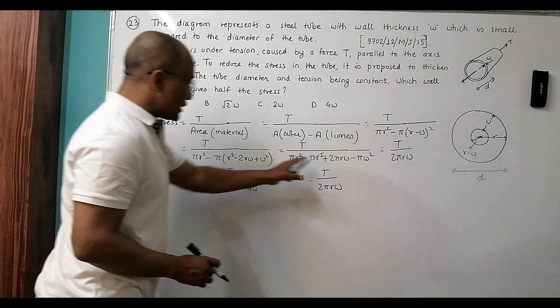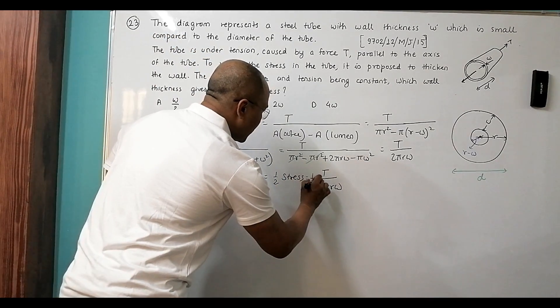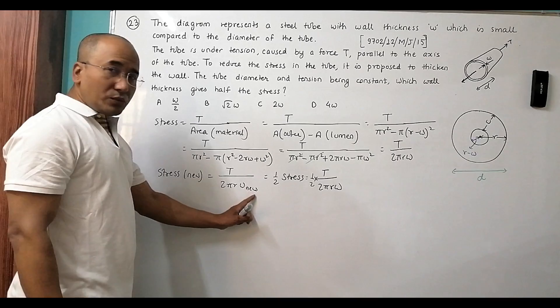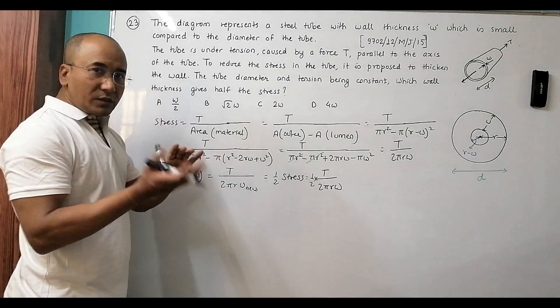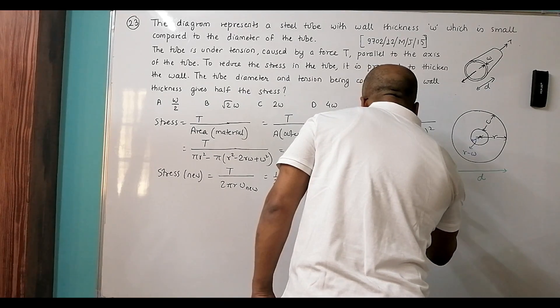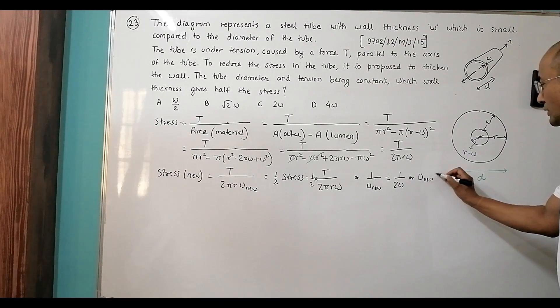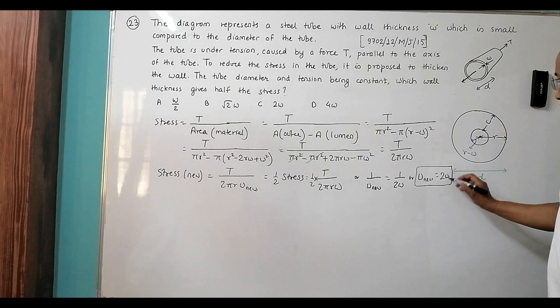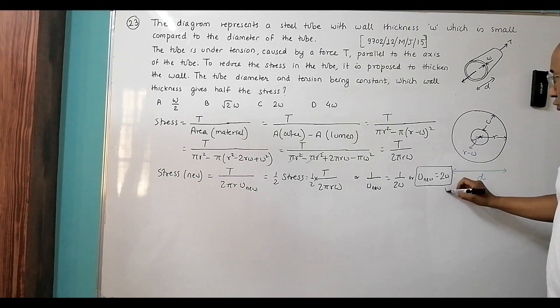Let me compare all these things. T and T goes, 2πr goes. What remains is w new equal to 2 times w. Though it is denominator, we can reverse it. 1 by w new equals 1 by 2w, which gives us w new equals 2w. So to reduce the stress to half, we should have w new equal to 2w. We have to increase this thickness to double the previous value. That's the solution to this question.